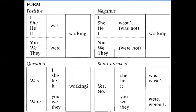We have the form for the positive statement, the negative on the right side, then the question and short answer. For the positive: I, she, he, it, plus 'was', then base form plus '-ing'. You, we, they, plus 'were', then the verb in base form plus '-ing'. So: I was working, she was working, he was working, it was working. You were working, we were working, they were working.